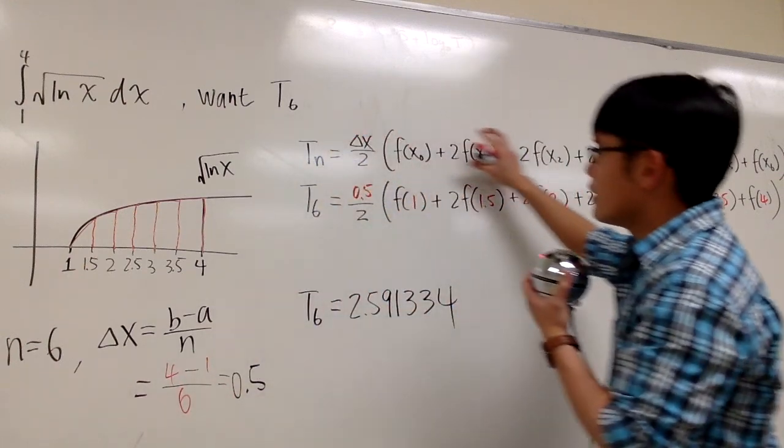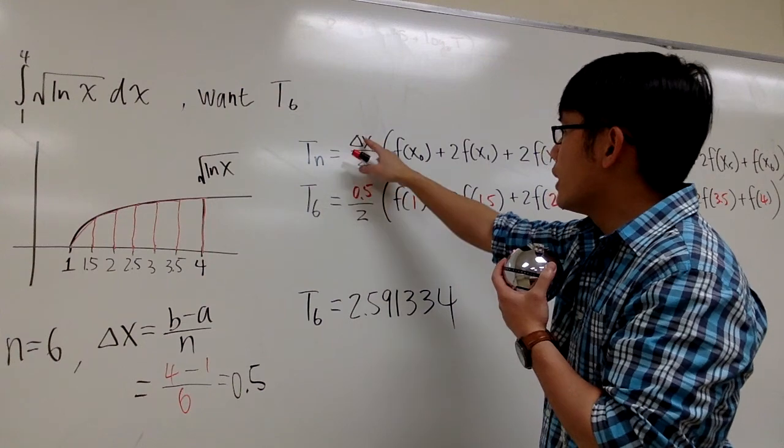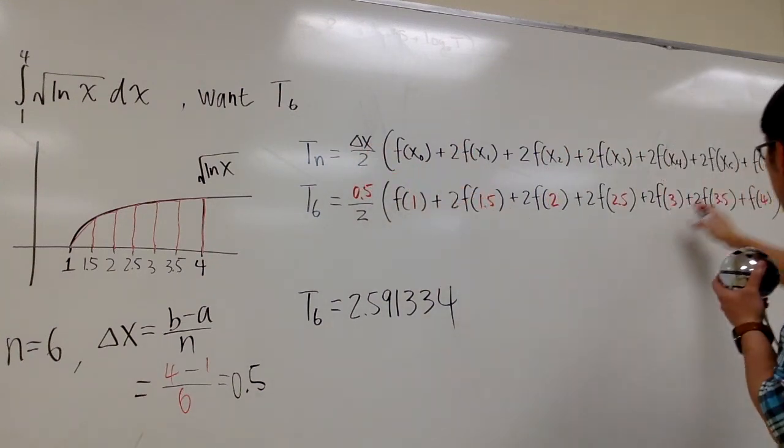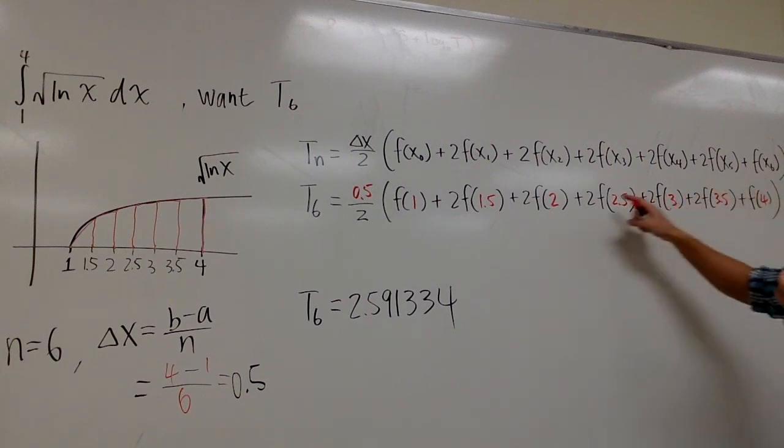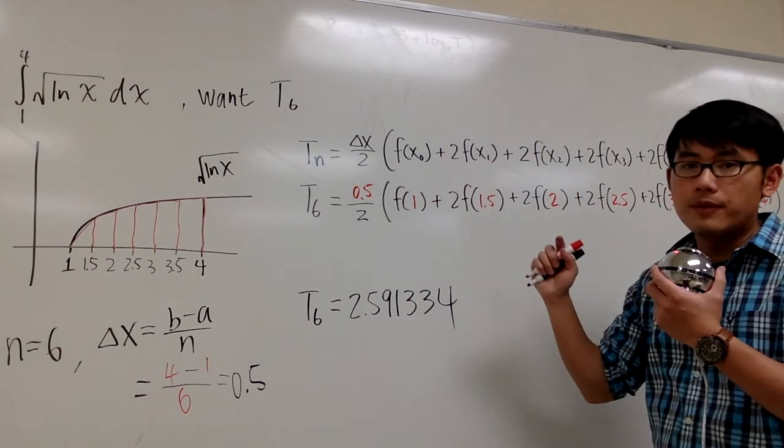Here's the formula for the trapezoidal approximation. T_n is equal to delta x over 2, and you have to remember the first and the last, the coefficients are just 1. Everything else has a 2 in front.